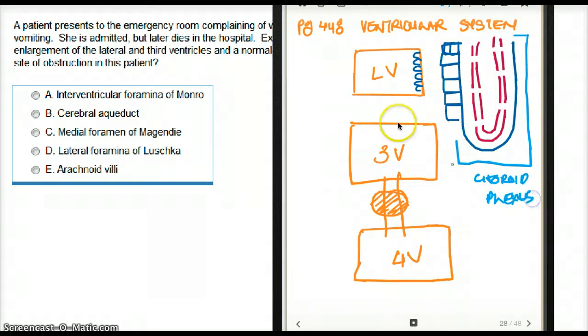These choroid plexuses are present in all three ventricles. Now this choroid plexus collects the CSF.